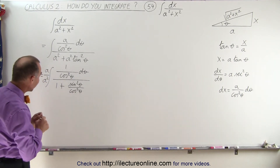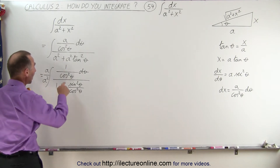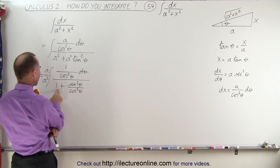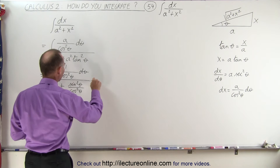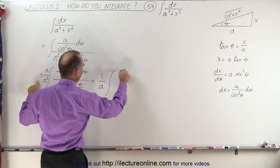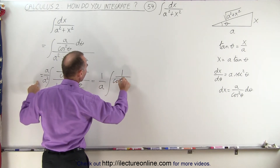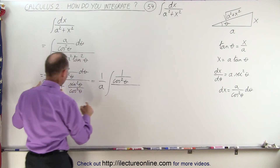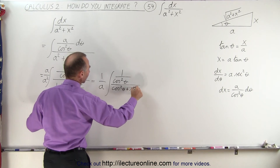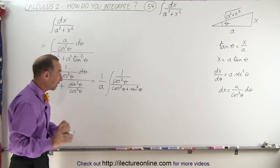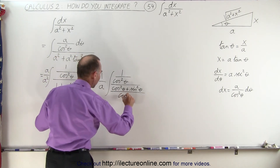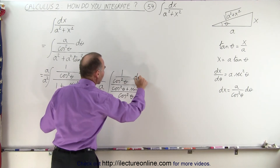Now let's take a look and see how we can simplify that. We have a cosine squared of theta and a cosine squared of theta, but not quite yet because we have the 1 plus. This can be written as 1 over a, because one of the a's cancels, times the integral of 1 over the cosine squared of theta, divided by — we can find the common denominator. This gives us the cosine squared of theta plus the sine squared of theta, divided by the common denominator of cosine squared of theta. We still have a d theta here.